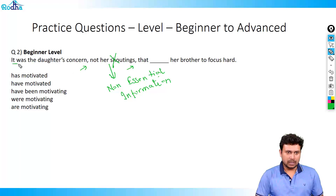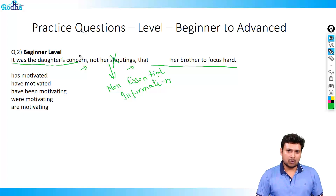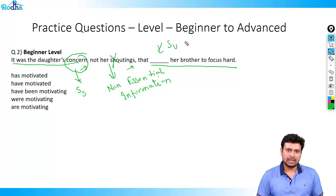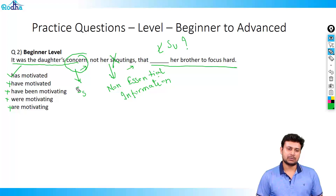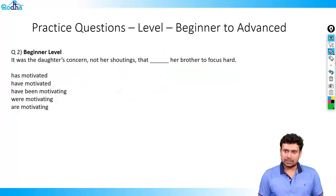So it should be: it was the daughter's concern that dash her brother to focus hard. What is motivating her brother is the concern. Concern is a singular subject, which means the verb needed has to be singular. Eliminating all plural verbs, you end up with one answer: it has to be 'has motivated'. I hope this is clear. Let's move on to the next question.